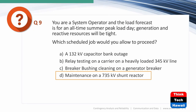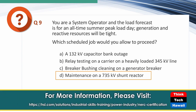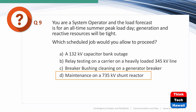Next question: You are a system operator and the load forecast is for an all-time summer peak load day — it's going to be hot. Generation and reactive resources will be tight. Which scheduled job would you allow to proceed? What you don't need on a day of high load, high heat, and high demand is any added risk to equipment.